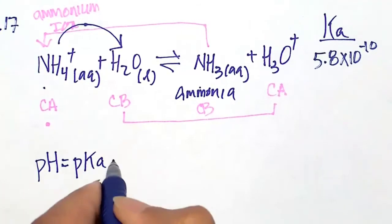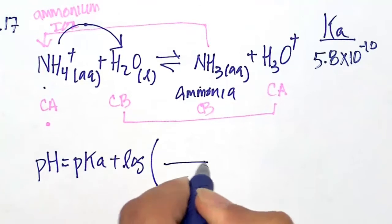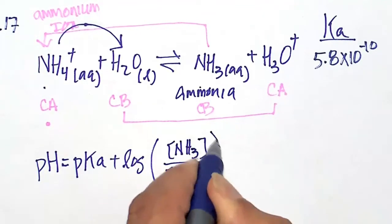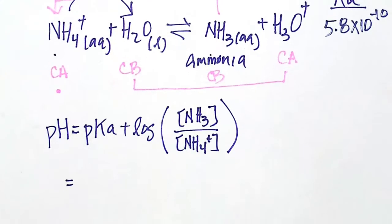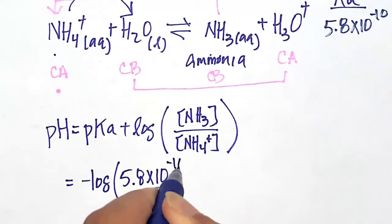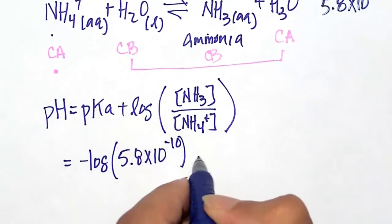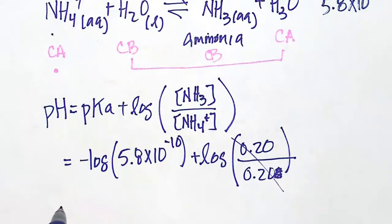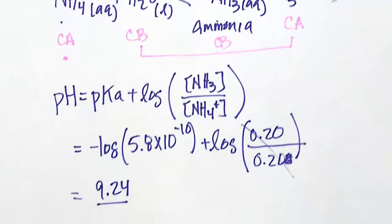We have pH equals pKa plus the log. If you want to know what goes inside the fraction, you drop the acid - that's a little memorization technique. Drop the acid, meaning the acid goes in the denominator, which means the conjugate base goes in the numerator. The pKa is minus the log of Ka, and the Ka here is 5.8 times 10 to the minus 10, plus the log of the concentration of the base over the acid. Both of these are at a concentration of 0.2 molar, so 0.2 over 0.2 is 1. Log of 1 is 0. So basically it's minus the log of the Ka, and on my calculator, that yields an answer of 9.2.